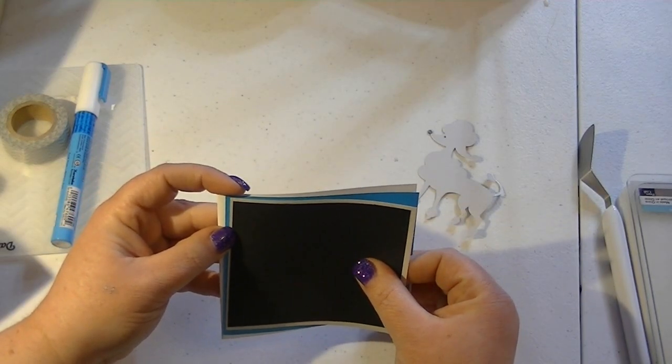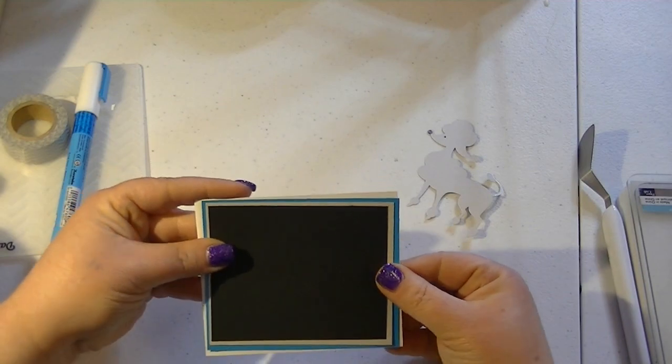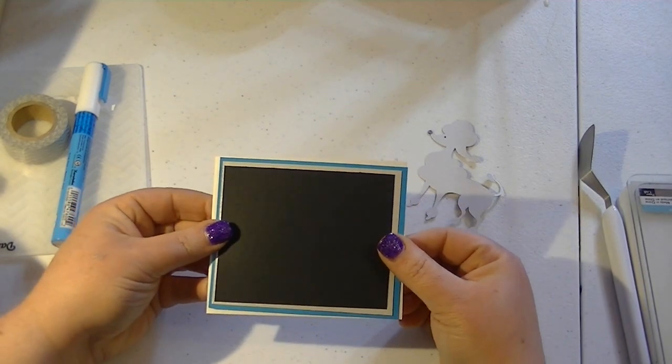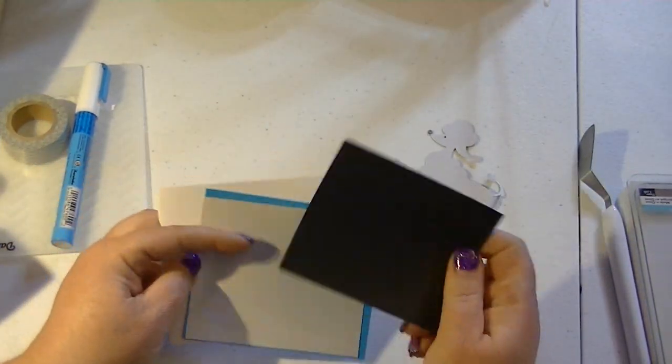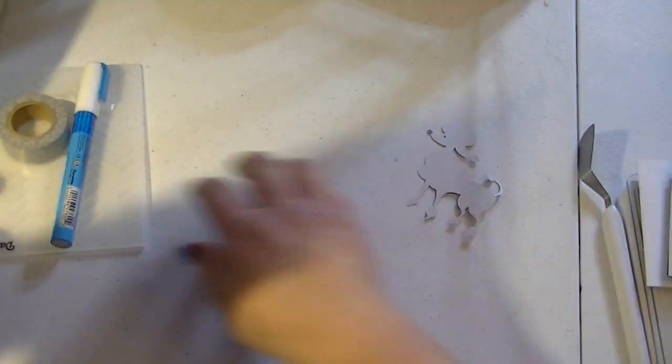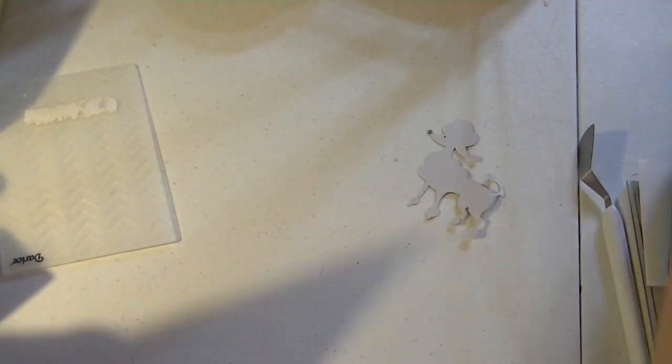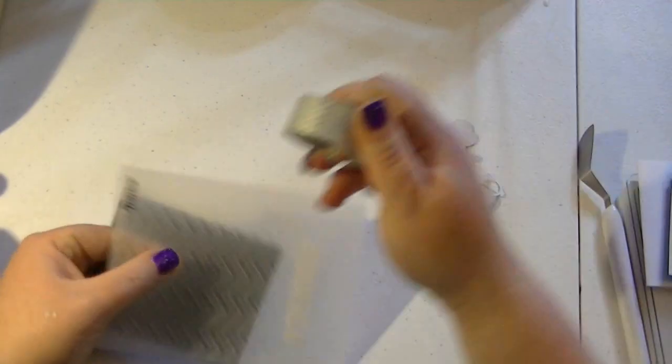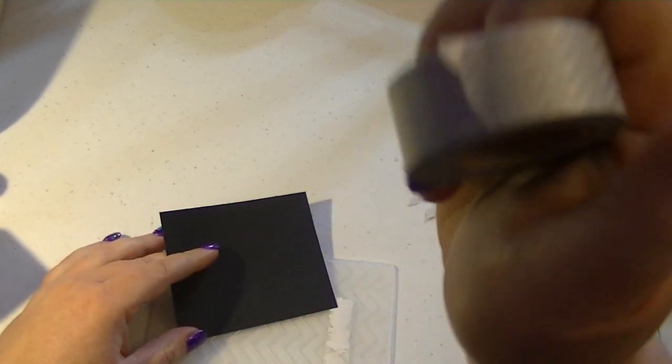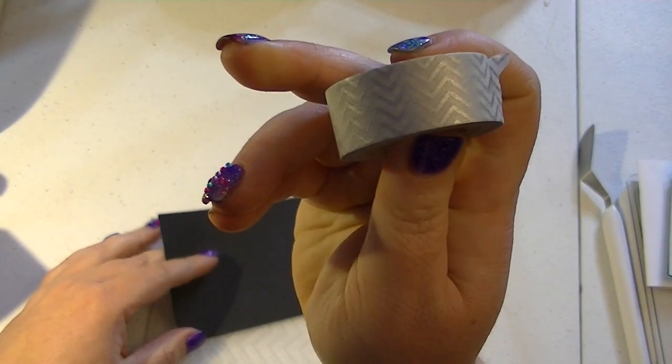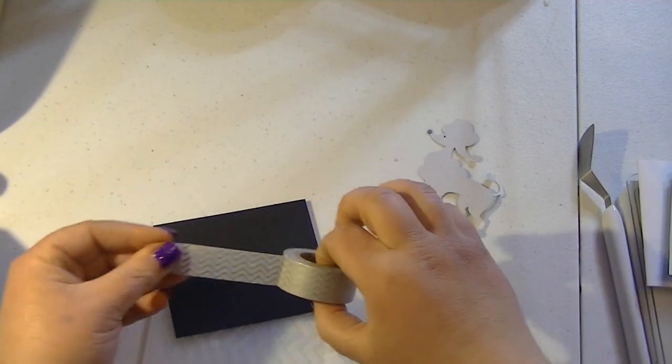And this is all going to layer something like that. But first I want to emboss this. I want to put this on here. And I think I'm going to put this washi tape on here. Can you see that? Before I emboss it.